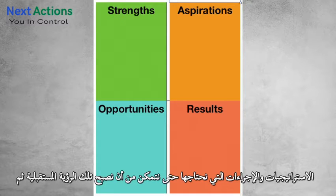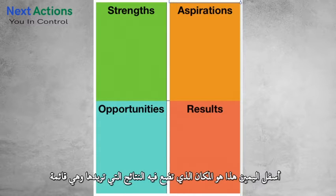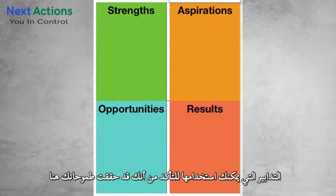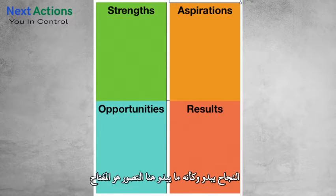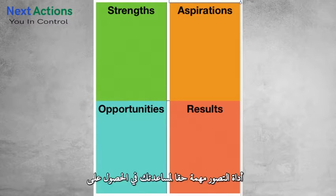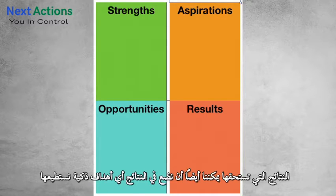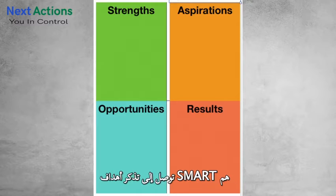Some questions for aspirations include: what do we want to achieve? How can we make a difference to others? What are our passions and how can we build on these? What strategies and actions do we need to become that future vision? The bottom right is where you put the results you want — a list of measures you can use to show that you have met your aspirations. Questions here include: how will we know we've succeeded? What does success look like? What does it feel like? Visualization is key, and we can also include any SMART goals we come up with.